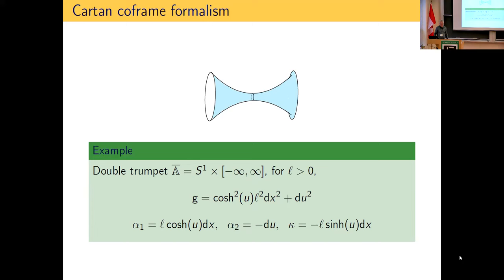For the hyperbolic cylinder, the nice choice of coframe is similarly readable from the metric. You calculate the spin connection — basically replacing cosh with a sinh-type expression — then take dκ and check it equals −α₁ ∧ α₂, confirming Gauss curvature is −1. Without the formalism, this would be much harder to check.